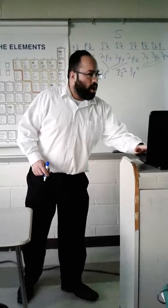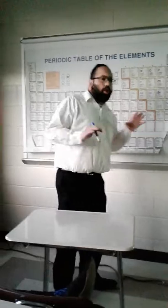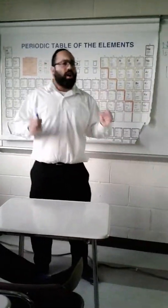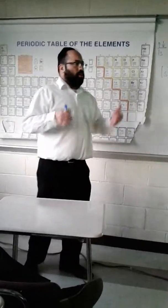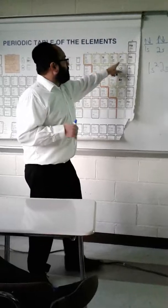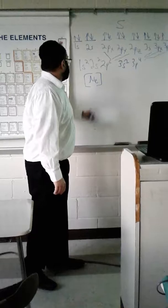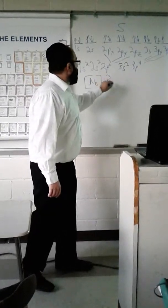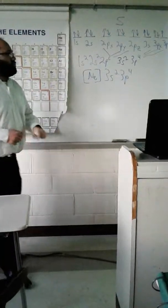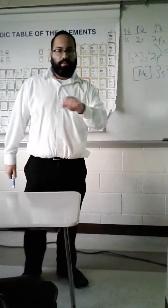We're going to simplify that one more time with noble gas notation. Noble gas notation says, you know what? At the end of the day, the only thing I really care about are the electrons that come after the previous noble gas. So, I'm going to take the previous noble gas of sulfur, which is neon, put it in brackets, like this, N-E in brackets, and then I put what came after the neon, right? Because at the end of the day, only the electrons that come after the noble gas are involved in chemical bonding.